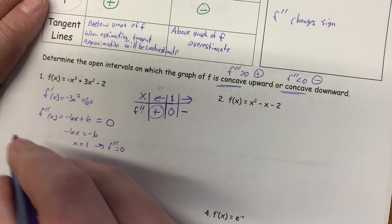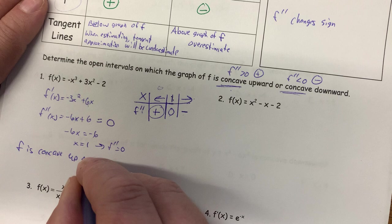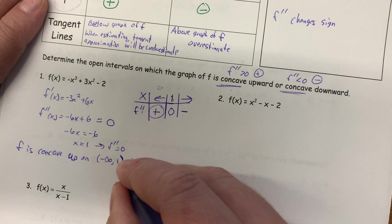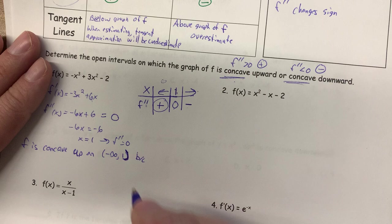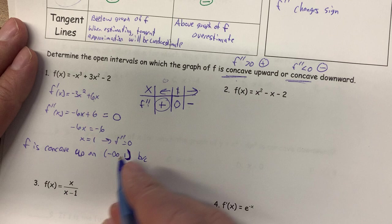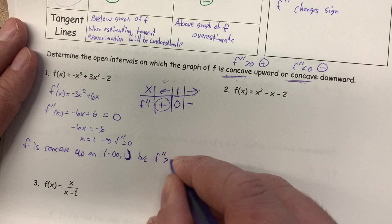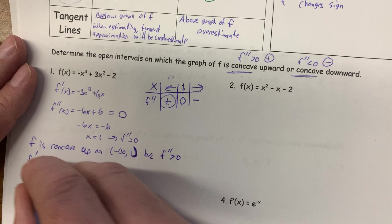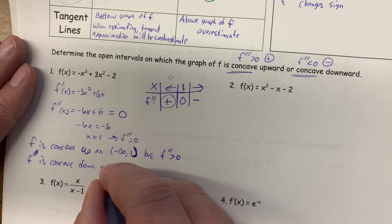When we pick a point to the left of 1, like 0, we plug it into the second derivative and get 0 plus 6, which is positive. When we pick a number to the right of 1, like 2, we get negative 6 times 2 is negative 12, plus 6 is negative 6 — negative. So f is concave up on the interval from negative infinity to 1 because f-prime-prime is greater than 0. f is concave down on 1 to infinity because f-prime-prime is less than 0.